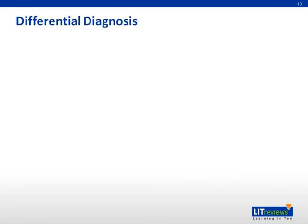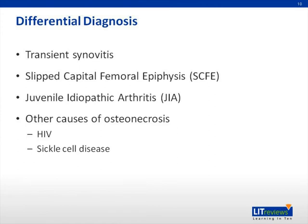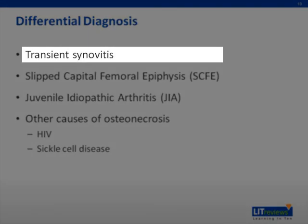Other diagnoses to be considered include transient synovitis, slipped capital femoral epiphysis (SCFE), JIA, or osteonecrosis secondary to either HIV or sickle cell disease. Transient or toxic synovitis is a benign, self-limited disorder causing acute hip pain, thought to be secondary to infection or trauma. The key to differentiating transient synovitis from Legg-Calvé-Perthes is timing — transient synovitis should resolve within approximately one week without treatment, whereas Legg-Calvé-Perthes will continue to progress.